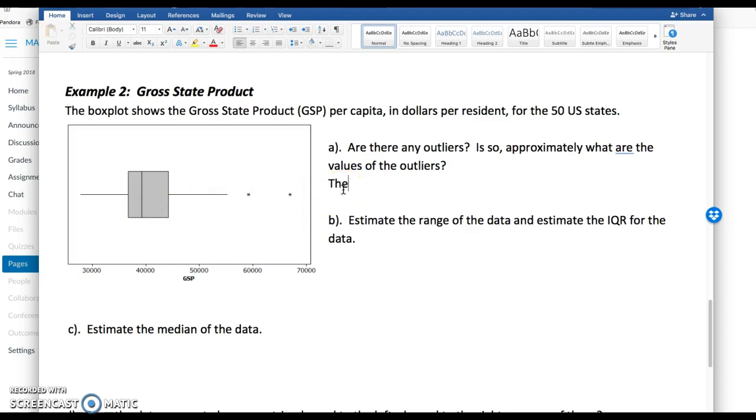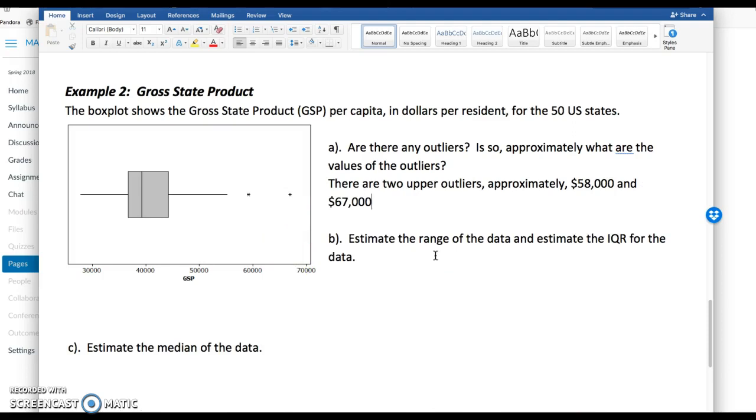We just have to look for these little pluses or asterisks or dots depending on the software program. So I can use these little asterisks. There are two upper outliers. And we need to be approximate here. This is going down here, I would guess around 58,000. And then the highest outlier looks like it's slightly more halfway between, so maybe 67,000. And there are no lower outliers because there's no dots or asterisks or anything over here.